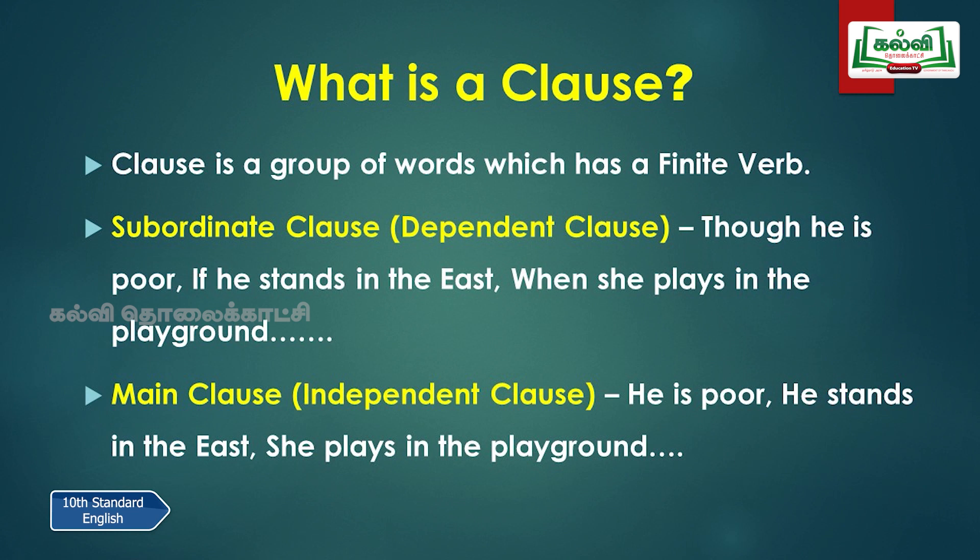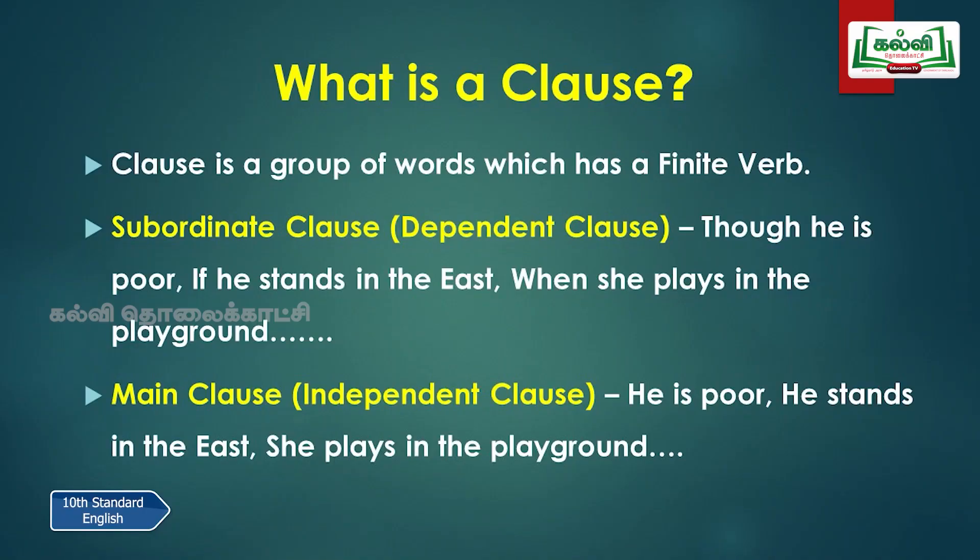In 'if he stands in the East', we have the subject 'he' and 'stands' shows it is a present form, even though it does not complete. This is why these are called subordinate clauses — the other name is dependent clause. Next is the main clause, which is also called an independent clause. For example, 'he is poor' — we have changed 'though he is poor' to a main clause: 'he is poor'. It will act as independent and would not depend on any other phrase or clause, so it is called a main clause.